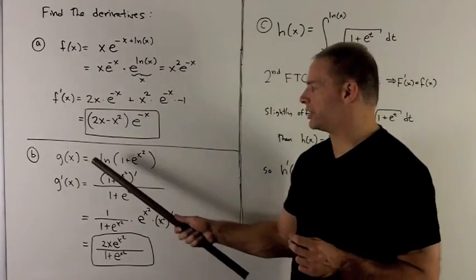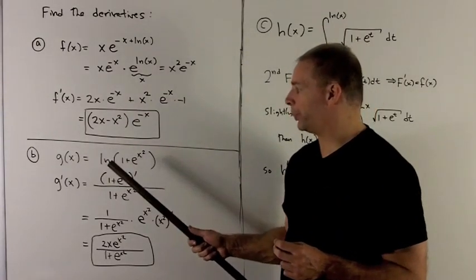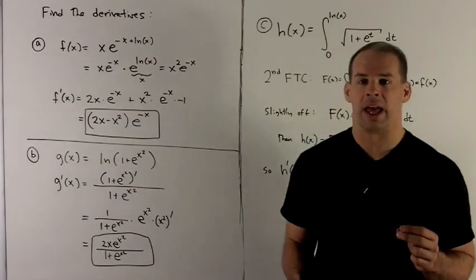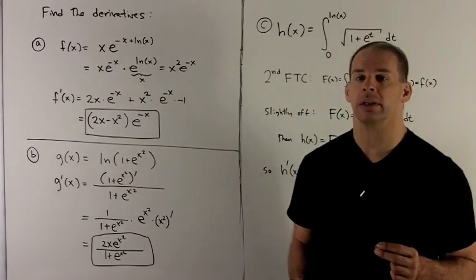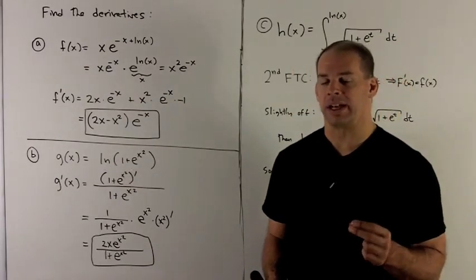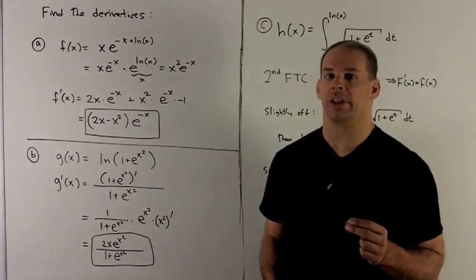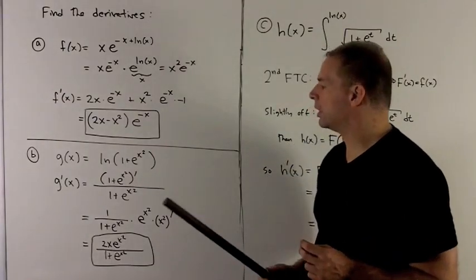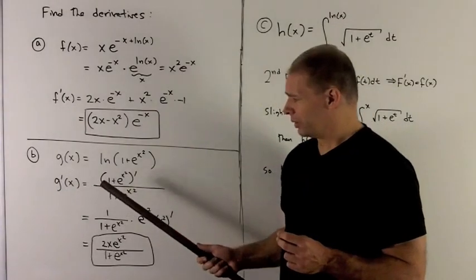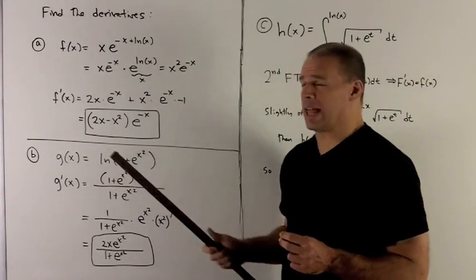Next function, let's look at g(x) equal to natural log of 1 plus e to the x squared. So we've got to deal with a natural log and an exponential in this case. So first, we're going to hit the natural log.